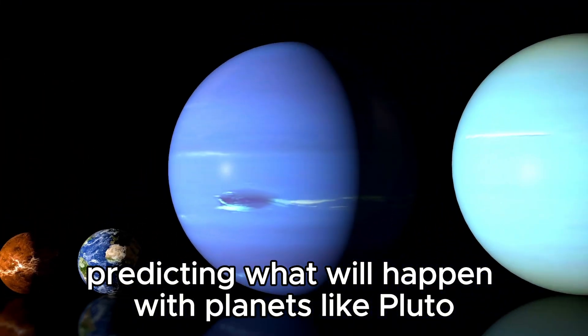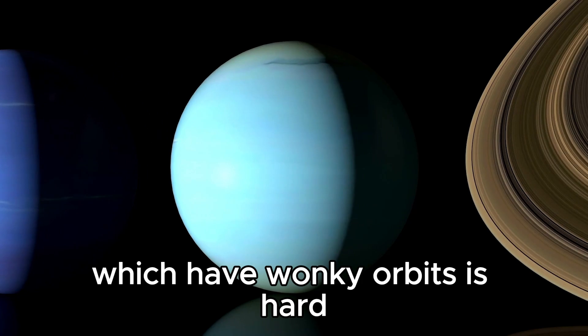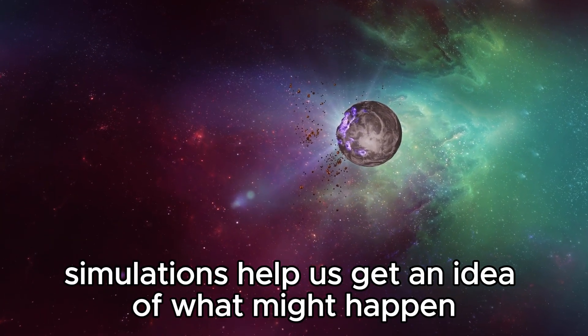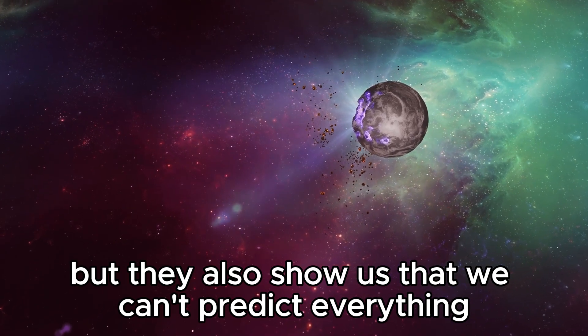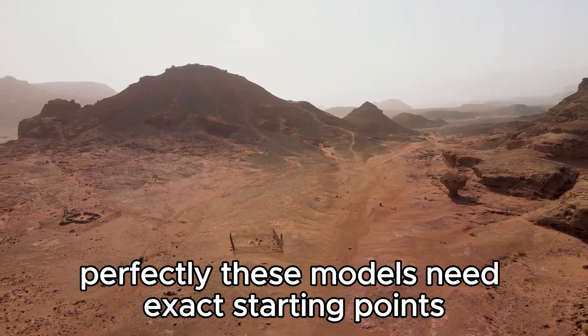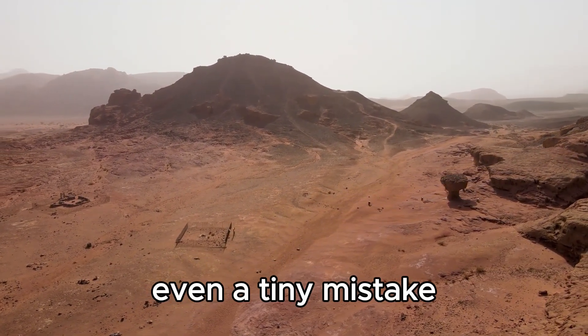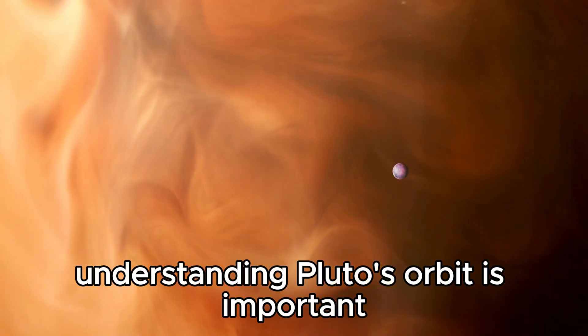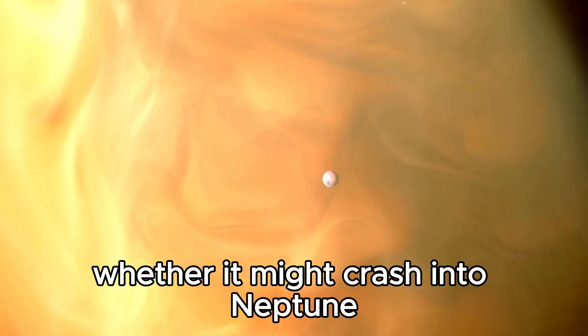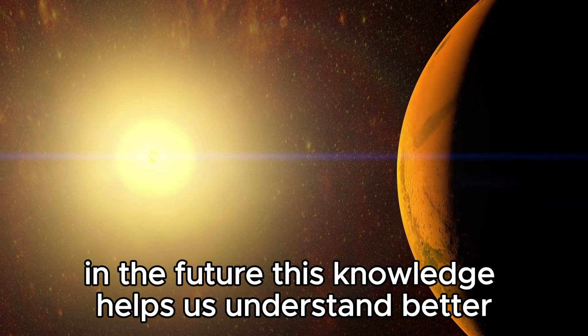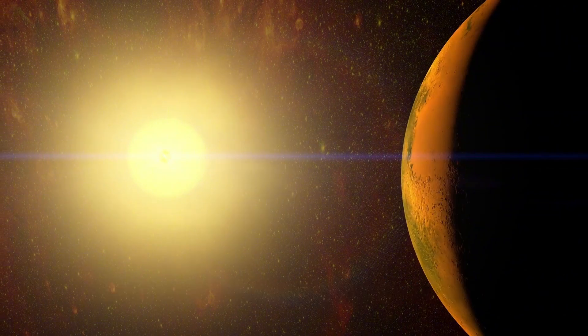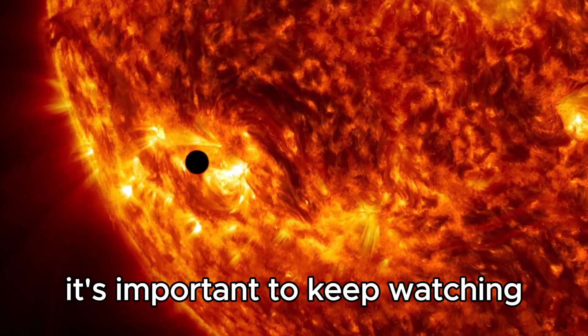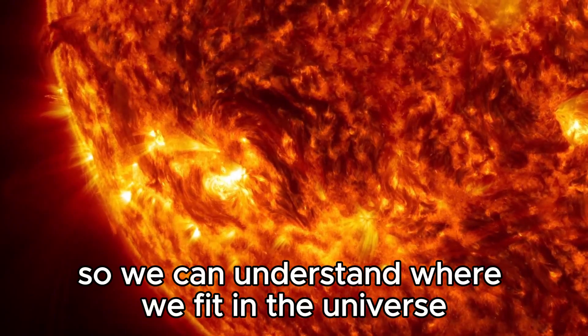Predicting what will happen with planets like Pluto, which have wonky orbits, is hard. These systems are so unpredictable that it's tough to guess what will happen in the long run. Simulations help us get an idea of what might happen, but they also show us that we can't predict everything perfectly. These models need exact starting points and they simulate complicated dynamics. Even a tiny mistake can lead to totally different results, which makes it hard to make accurate predictions. Understanding Pluto's orbit is important, especially when we think about whether it might crash into Neptune in the future. This knowledge helps us understand better how our solar system works. It's important to keep watching and studying these things so we can understand where we fit in the universe.